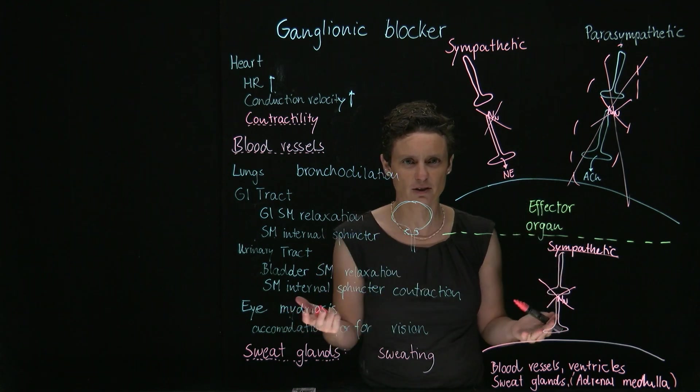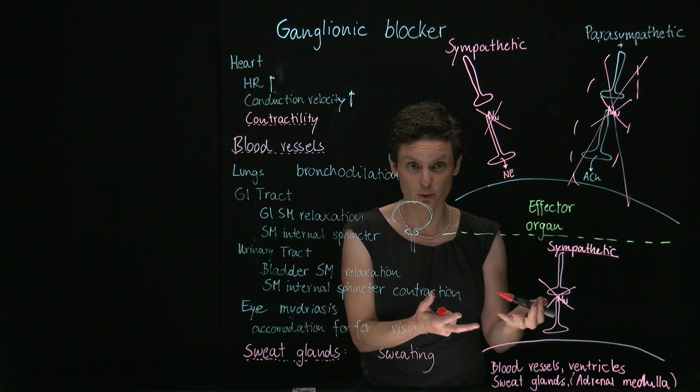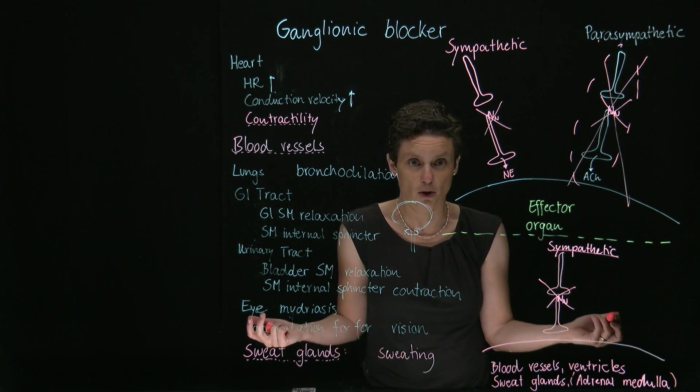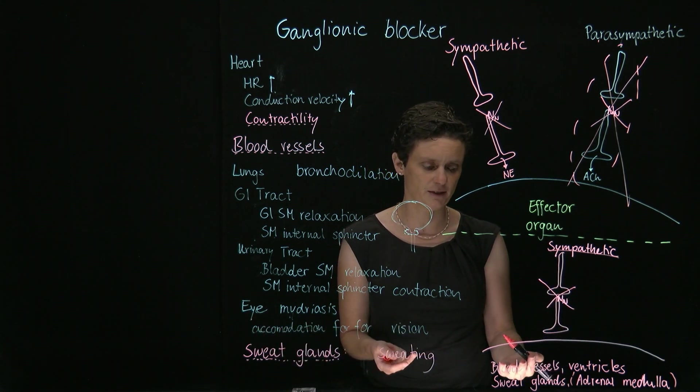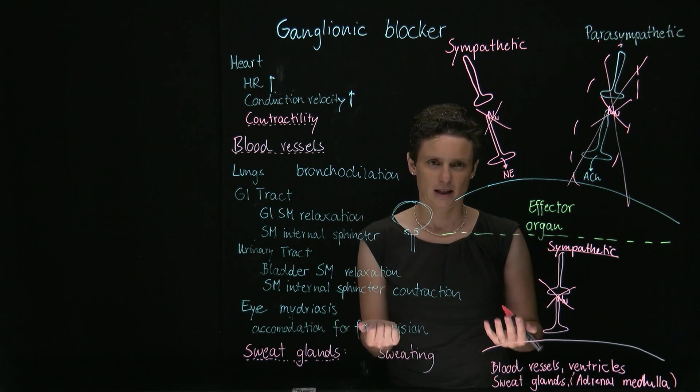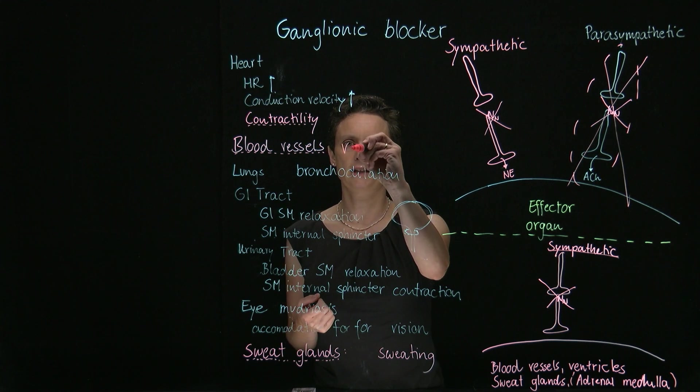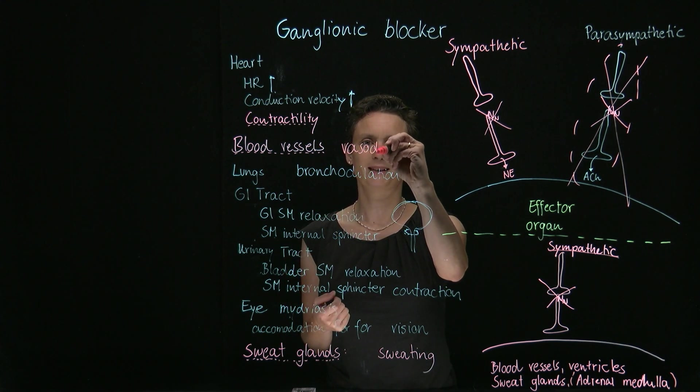Here, of course, our model is not going to work because we don't have dual input. We have only sympathetic input. So we're just going to block sympathetic input and get the opposite effect. Blood vessels, the dominant tone is vasoconstriction, so blood vessels are going to dilate. We're going to get vasodilation.